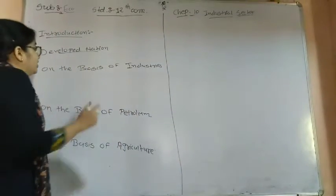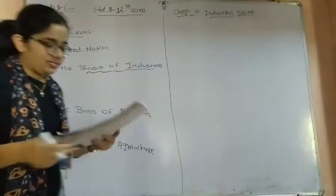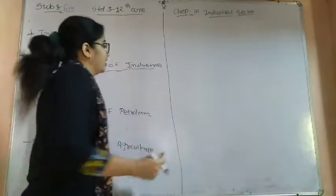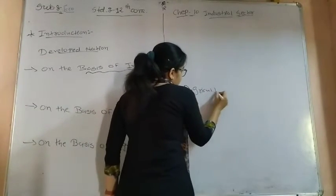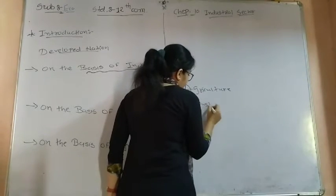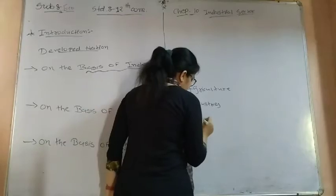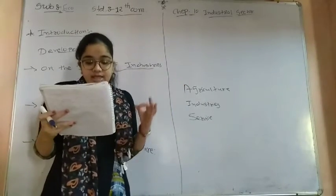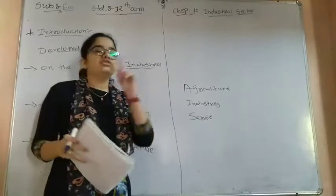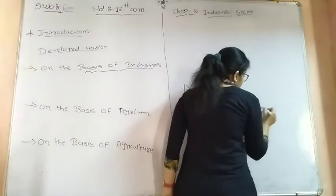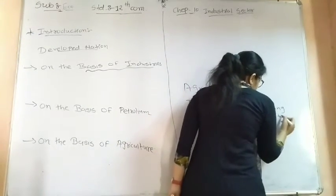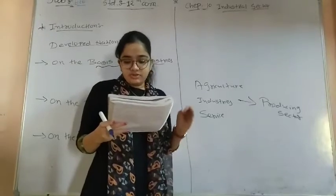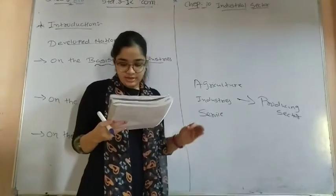Most of the industrial-based nations of the world have a combination of three producing sectors: agriculture, industry, and service. Industry is one of the most important producing sectors, and therefore it has major importance in economic development.